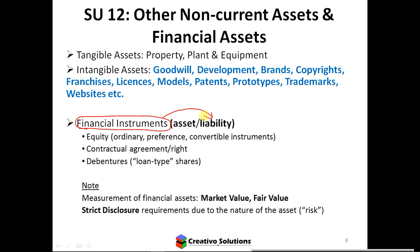If you issue a bond to raise capital, the business will have a liability — the business needs to pay back the bond. Equity is ordinary, preference, or convertible. Debentures is a loan type of share which is actually a liability — that's the one they talk about quite a bit in the textbook.